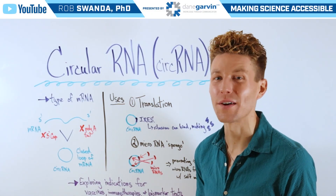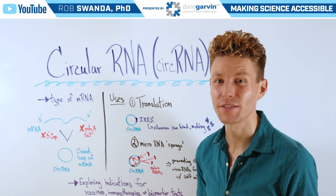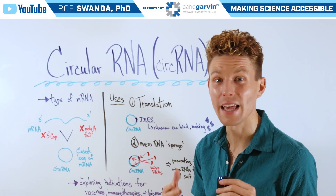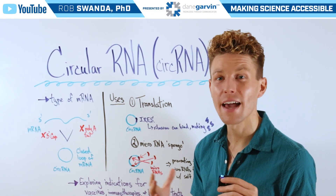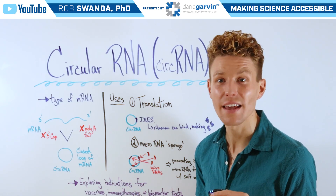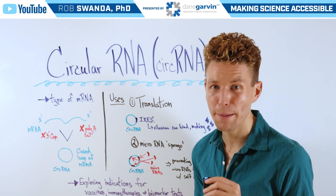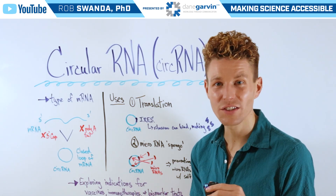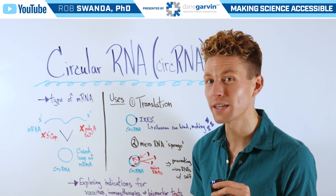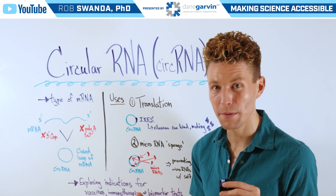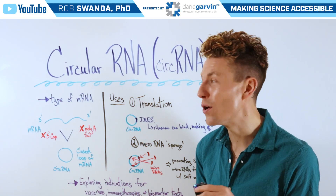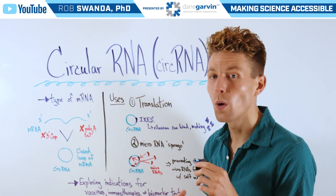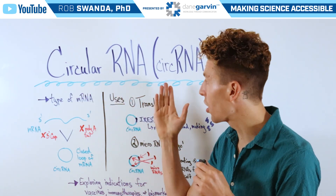On the channel, we've broken down a variety of different RNA molecules, such as mRNA, siRNA, and RNA aptamers. So let's continue that education and break down another type of RNA, known as circular RNA, or circRNA.